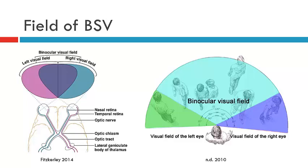This will correlate to the mapping of the diplopia. So if on the diplopia chart you have areas of BSV or single vision, they will correlate to the field of BSV. There should be a direct relationship between the two.